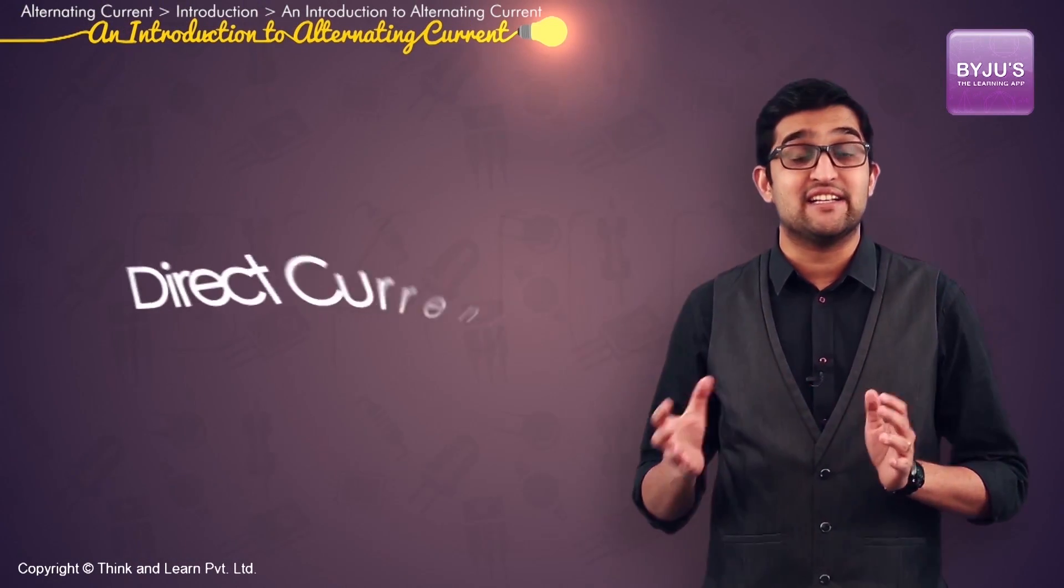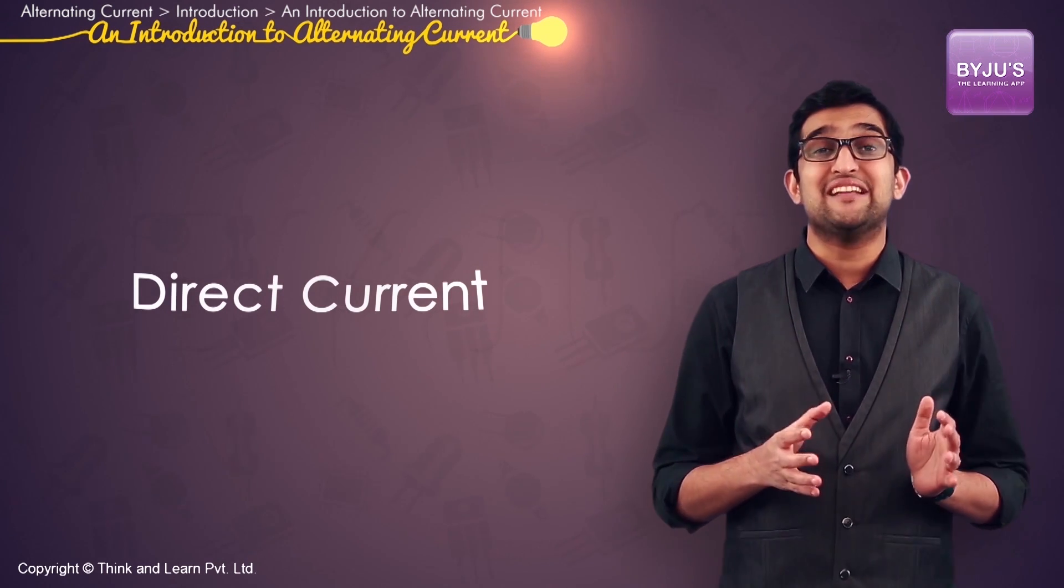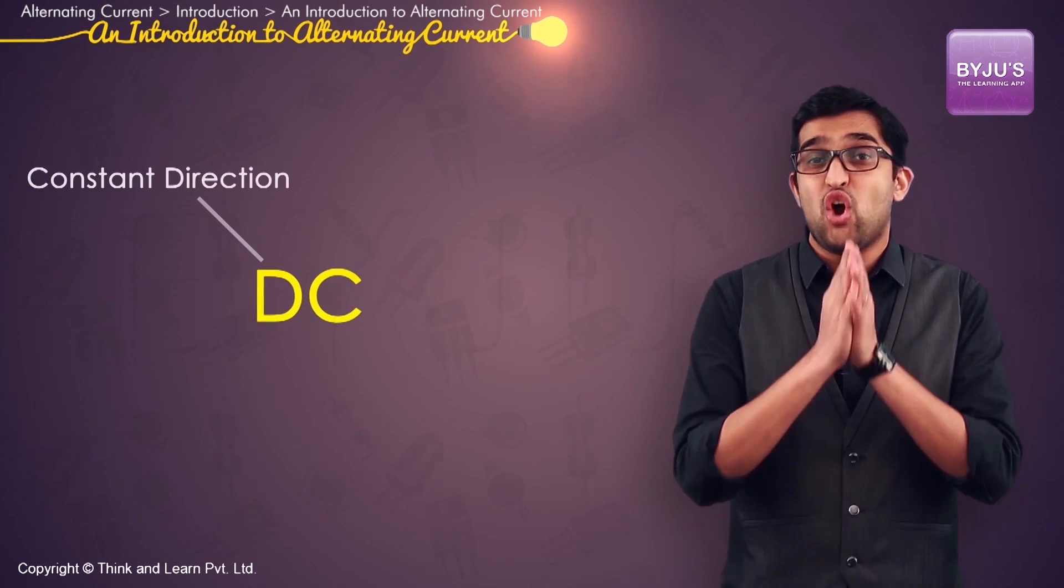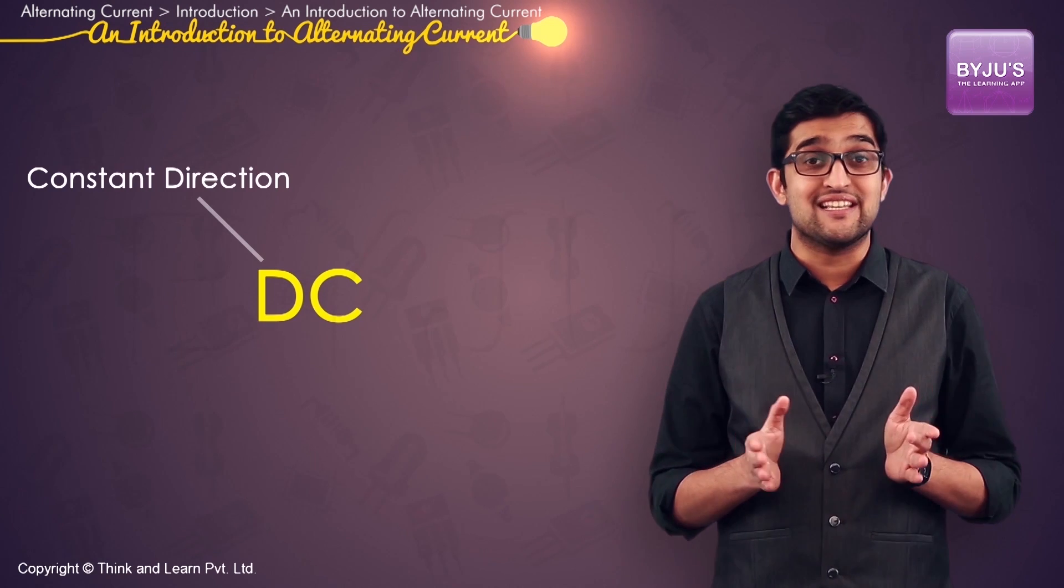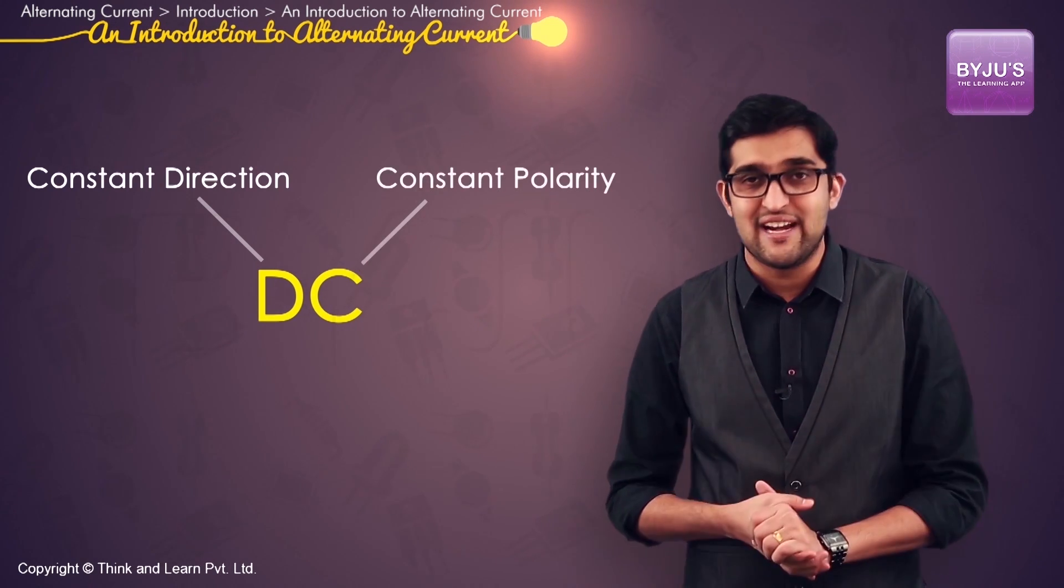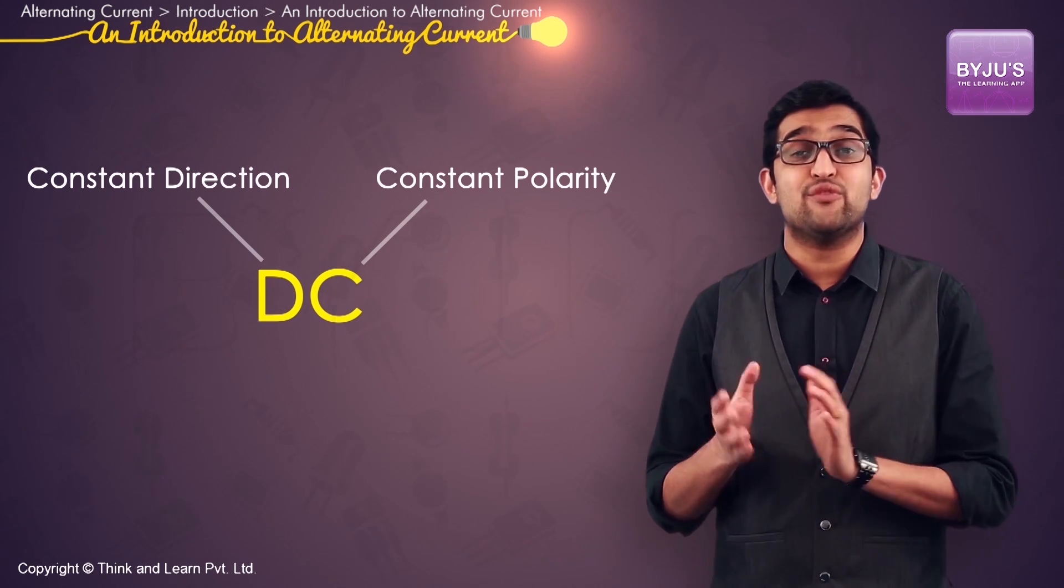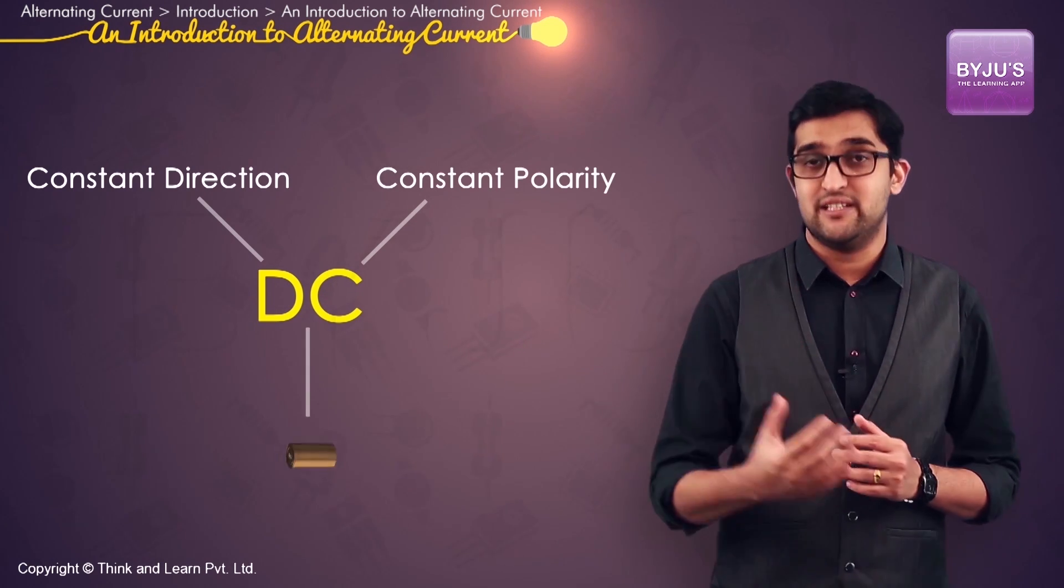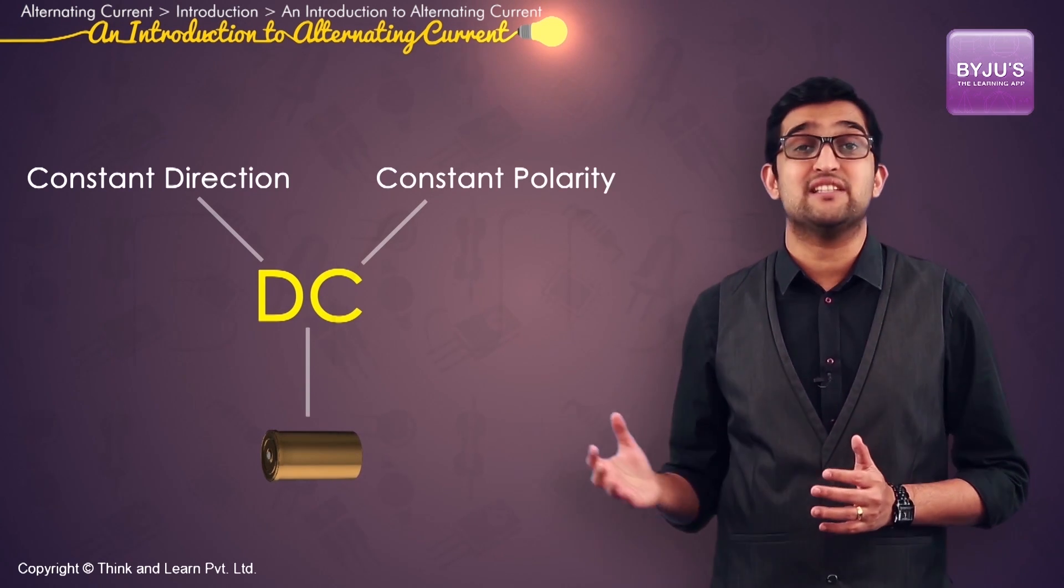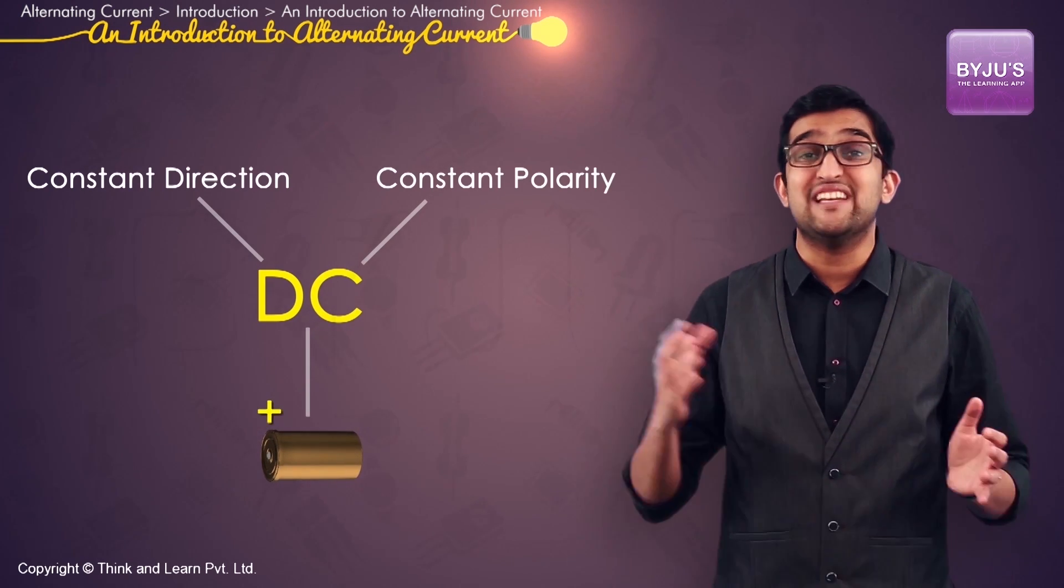Most of us begin our study with what is known as direct current, which is nothing but electricity flowing in a constant direction or possessing a voltage with constant polarity, either negative or positive. DC is the kind of electricity made by a battery, by which current passes from the positive terminal to the negative terminal.